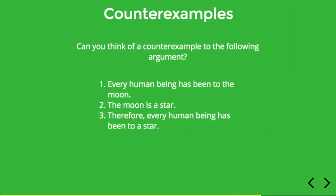Let's look at one more example: Every human being has been to the moon; the moon is a star; therefore every human being has been to a star. Can you think of a counter example? Remember, just because the premises are obviously false in reality doesn't matter — you just have to assume they're correct and then try to falsify the conclusion. In this case, it doesn't seem possible to come up with a counter example, so that suggests the argument is probably valid.